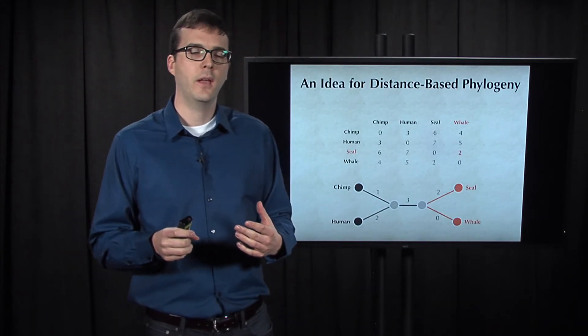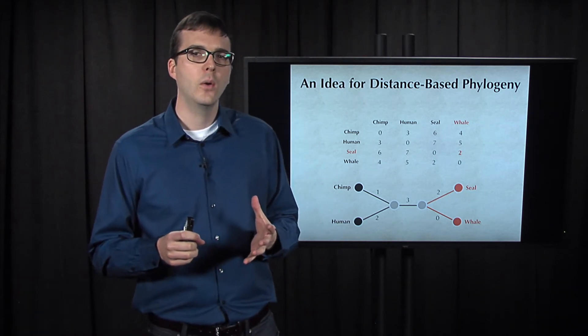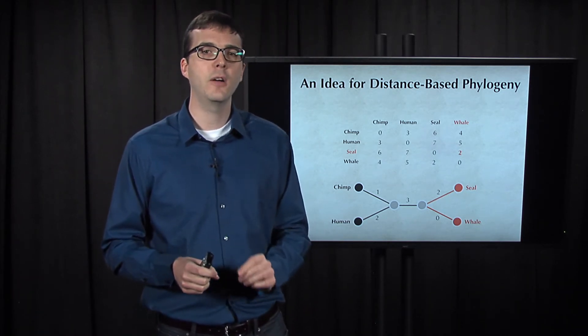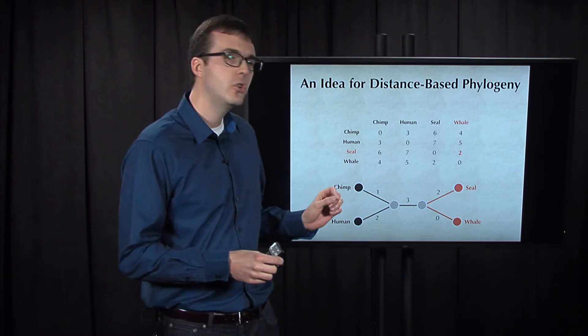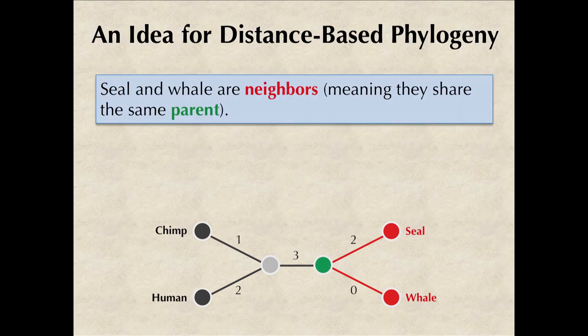Here's an idea. If we look at the tree that we know fits our toy distance matrix, we can see that the minimum element of this matrix corresponds to two leaves that are next to each other in the tree. Here the smallest element corresponds to seal and whale, and seal and whale are next to each other in the tree.